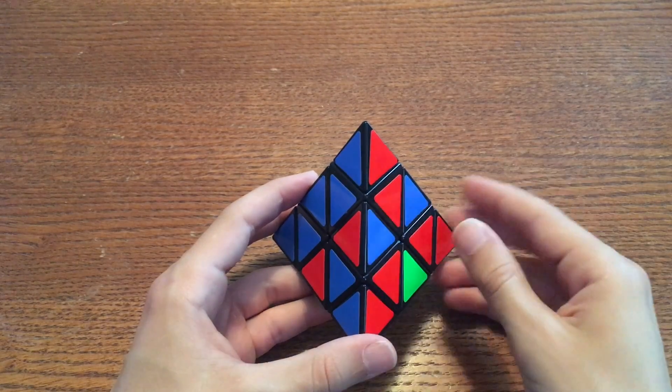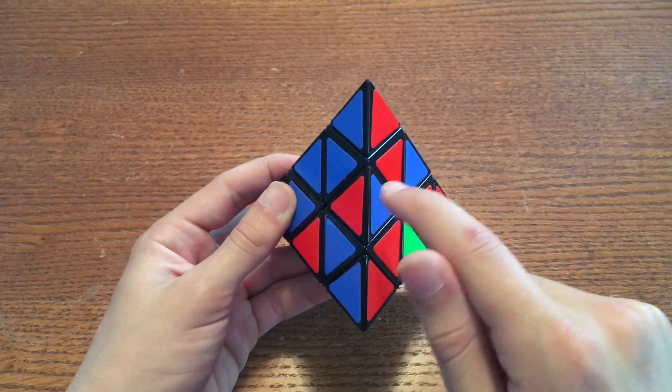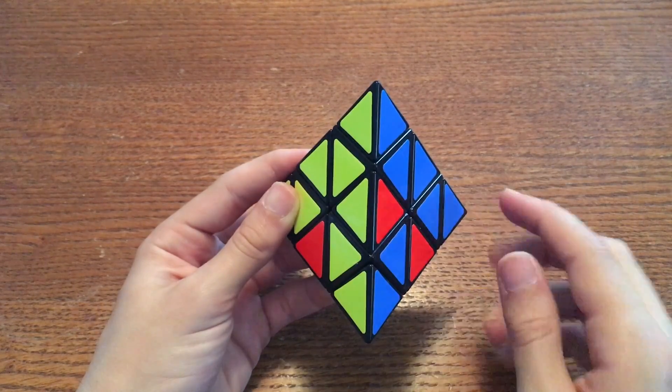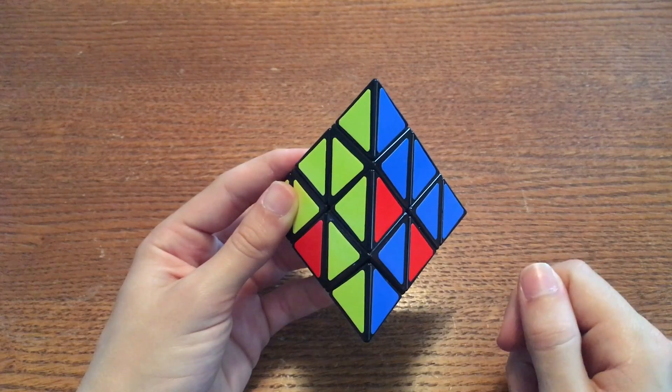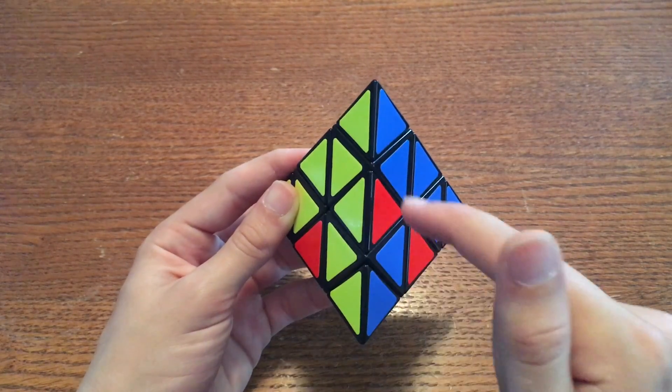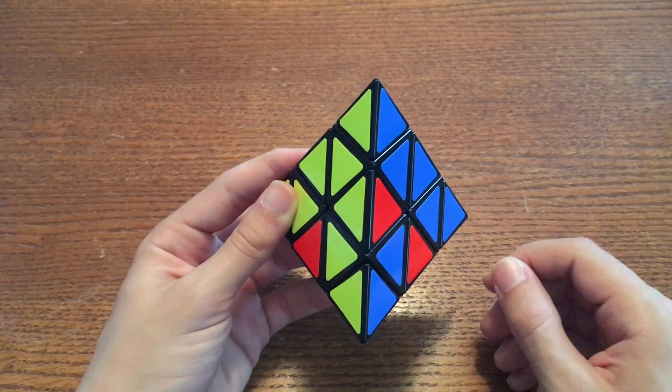This edge, even though it is flipped the wrong way, is still in the correct place because it is red and blue and the adjacent pieces are red and blue. This edge is not in the correct place. Even though it has yellow and some of the adjacent pieces are yellow, the red does not match up with the blue. Remember, both of the colors need to match.